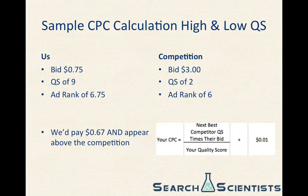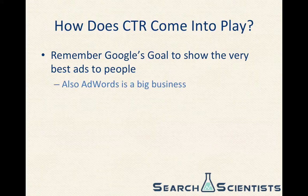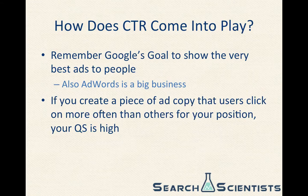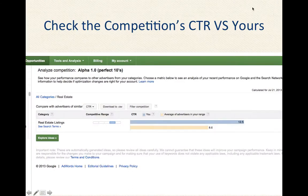So the power of understanding this relationship between bid and quality score is extremely important in understanding where our ads show up. The title of this video was understanding the relationship between CPC and CTR and how to rank higher, but I don't see CTR anywhere on this page. So where does CTR come into play? It's important to remember Google's goal of showing the very best, most relevant ads to people. Google wants people to click on their ads and wants those ads to be genuinely helpful. So if you create ad copy that users click on more often than others for your position, you'll be given a high quality score because Google will associate that high click-through rate with high relevancy. As a general rule of thumb, the highest CTR often earns the highest quality score.